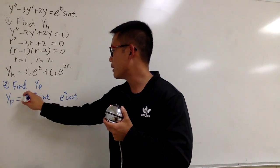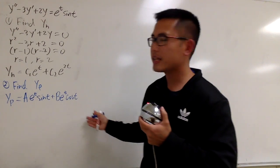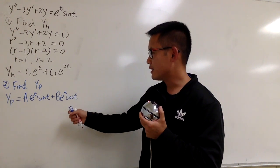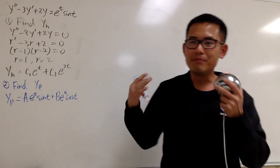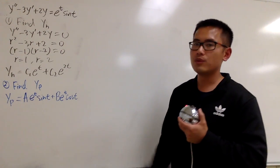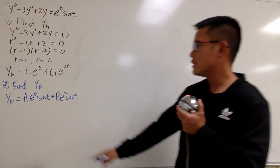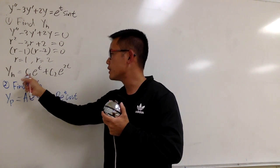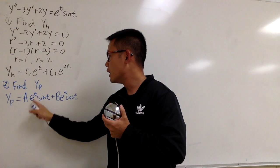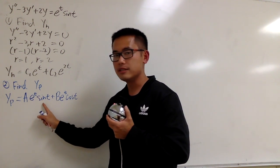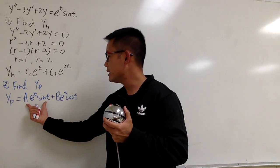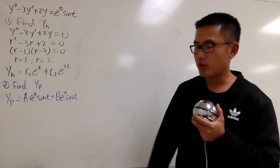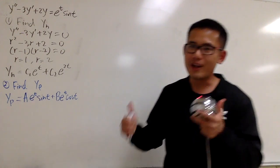I don't know the coefficients yet, so I'm going to put down a and b, and then add them up. We take this and differentiate twice, then plug in the second derivative, first derivative, and original into the differential equation, and match the coefficients to find a and b. Also note: yes, we have e^t here and e^t here as well, but these are not constant multiples of each other — they are linearly independent — so we don't have to multiply by any extra t, which is great news.